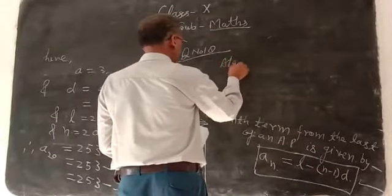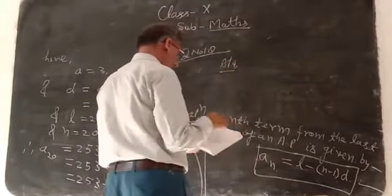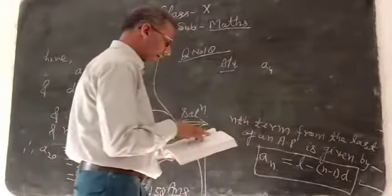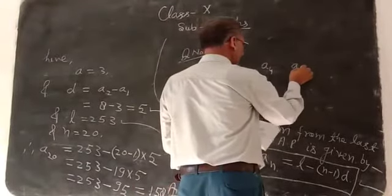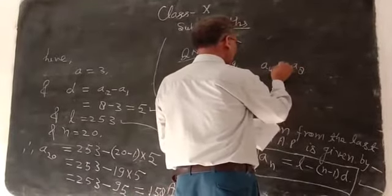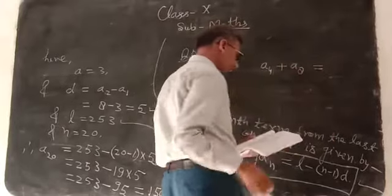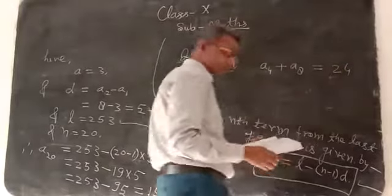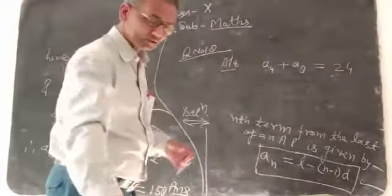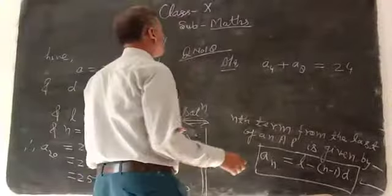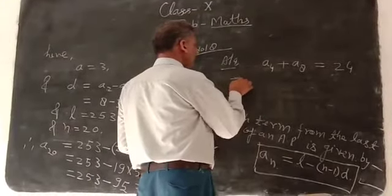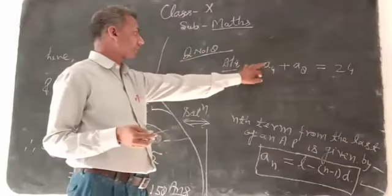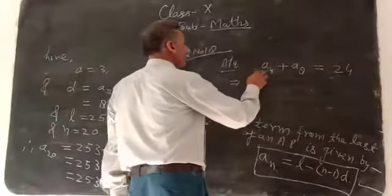According to the question, the sum of A4 and A8 is equal to 24. A4 plus A8 is equal to 24. Clear?